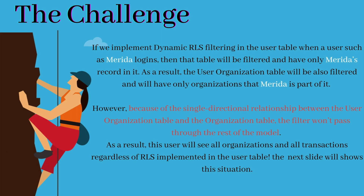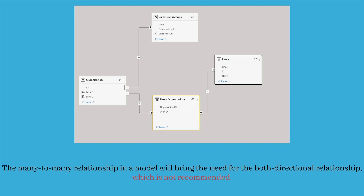In the next slide, I'll show you how this is happening. The user table can filter the users organization table. For example, suppose Merida is going to log in — the user table first identifies who is logging in, then propagates filters to the users organization table. You have to look at the arrow sign: the arrow goes from users to the users organization table. So the users organization table gets filtered out, but it cannot filter the organization table, which in turn filters the sales transaction table. That's why this kind of relationship is not going to work.